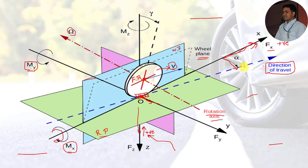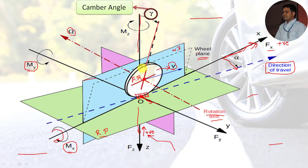The next term is camber angle — the angle between the wheel plane and the vertical axis. The dotted line indicates the wheel plane, and the angle between the wheel plane and the vertical axis is the camber angle, indicated by gamma. If the vehicle's top is leaning towards the outside when observed from the front, it is a positive camber angle. If it is leaning inside, it is a negative camber angle.